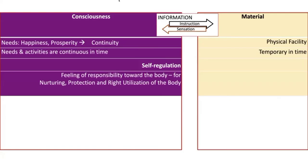The consciousness is there, the material is there. There is exchange of information taking place between the consciousness and the material. The consciousness is sending instruction to the material and receiving sensation from the material. If you look at the needs of consciousness, it is to ensure happiness and prosperity — more precisely, it is the continuity of happiness. So the needs are continuous; the activities are also continuous in time.